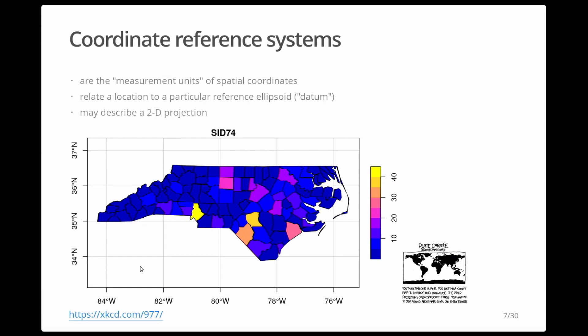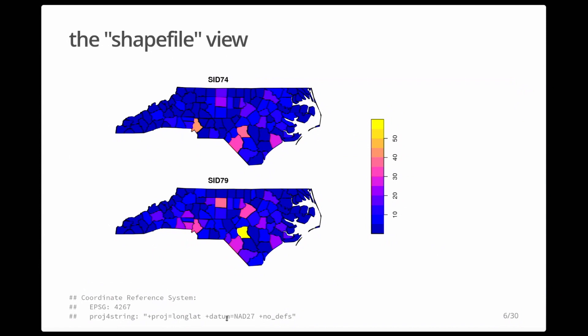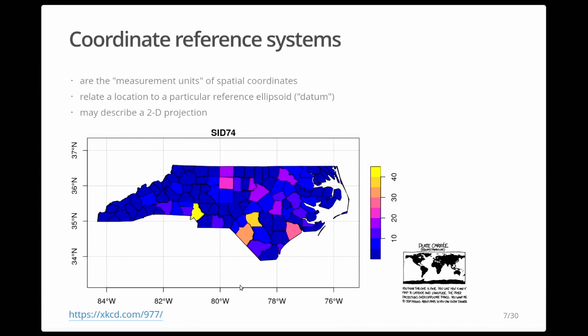You could see coordinate reference systems as the measurement units of spatial coordinates — they tell you where you are and how a numeric value should be interpreted. They relate coordinates to a reference ellipsoid, called a datum, which is a model for the Earth, but not exactly the Earth because the Earth is not an ellipsoid. There are multiple datums — NAD27 is different from WGS84, and even WGS84 is about 40 years old, and we have plate tectonics, so the world moves.